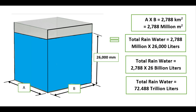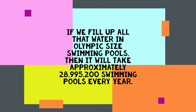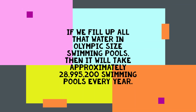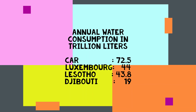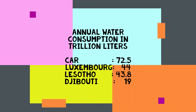And just due to its enormous size and huge millimeter reading, the total water which falls on Mawsynram is somewhere around 72 trillion and 488 billion liters. If we fill all that water in Olympic-sized swimming pools, then it will take approximately 28,995,200 swimming pools every year. Or in more practical sense, it can support the water requirements for entire populations such as Central African Republic, Luxembourg, Lesotho, and Djibouti.